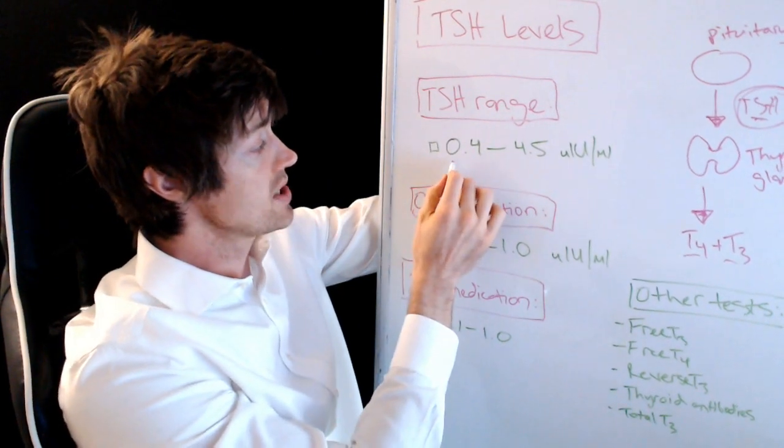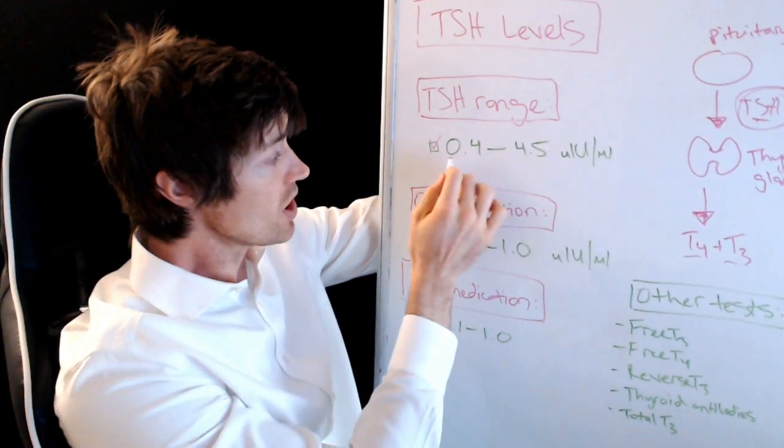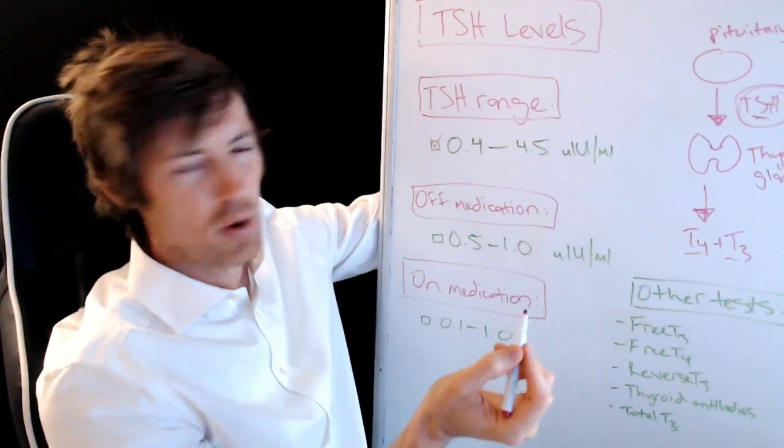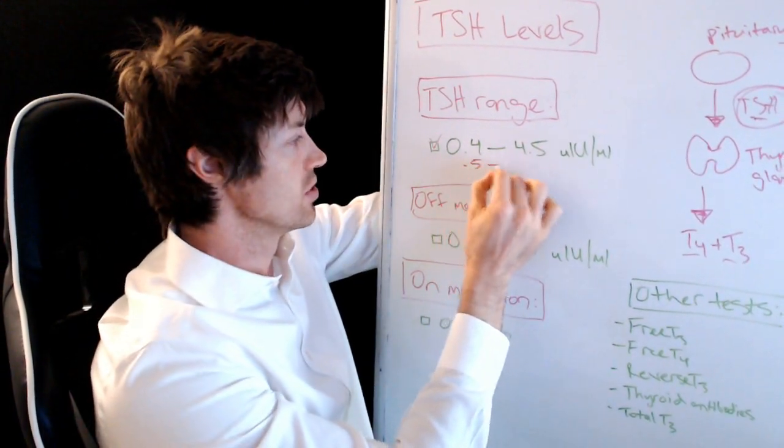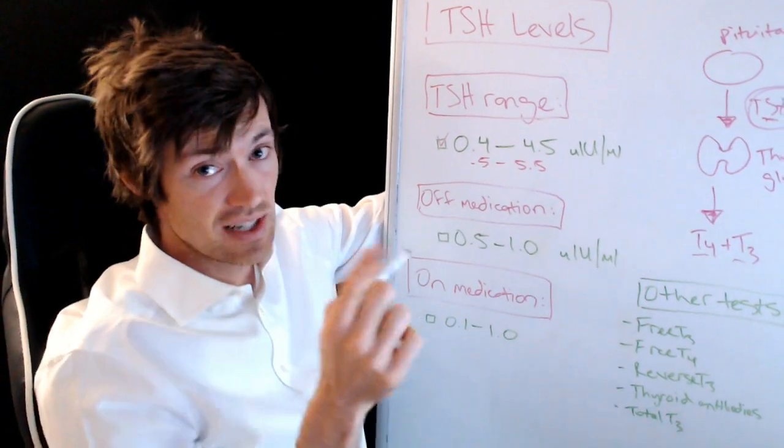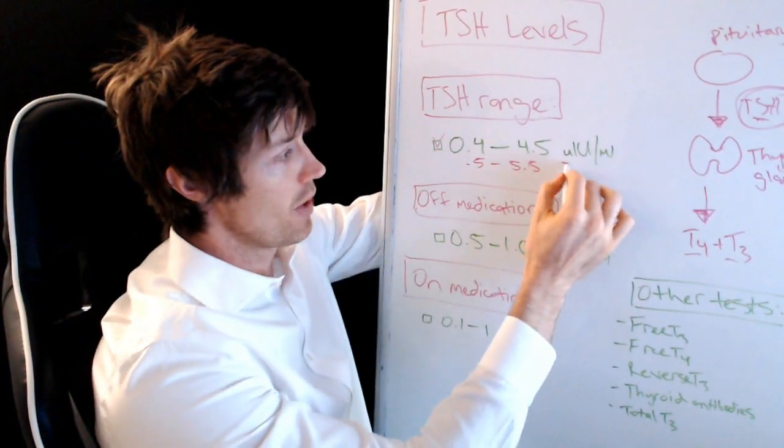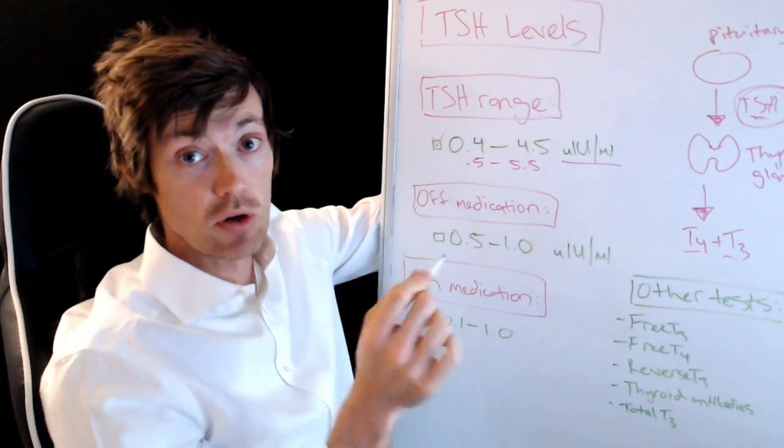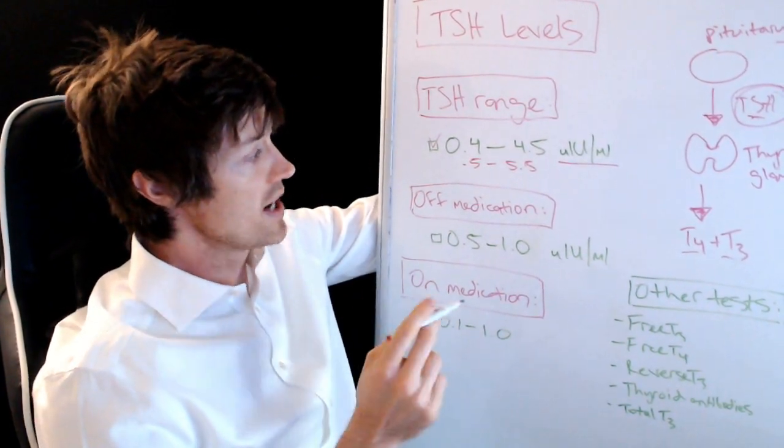But what you need to understand, and that's where we're going to start first, is the difference between a normal range and an optimal range. Okay, so this is the range that you'll probably see on your lab test. The range will be somewhere between 0.4 and 4.5 or 5.5. Sometimes it's 0.5 to 5.5. It's somewhere around there.